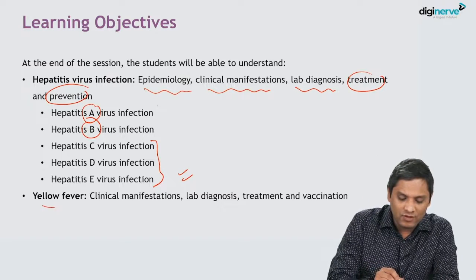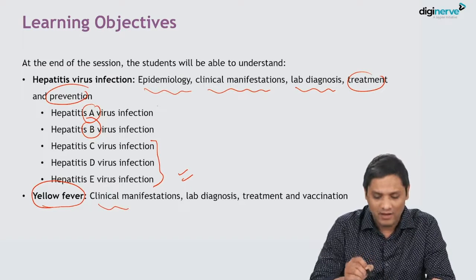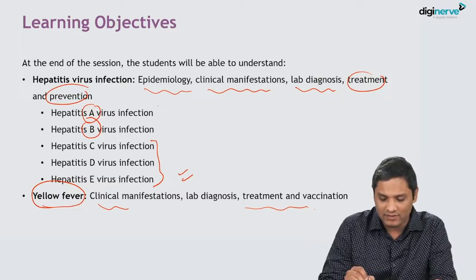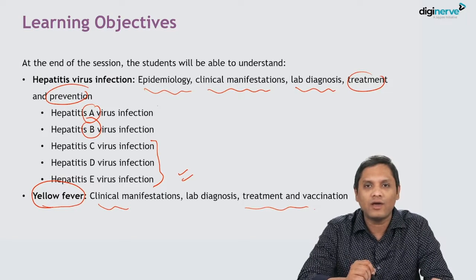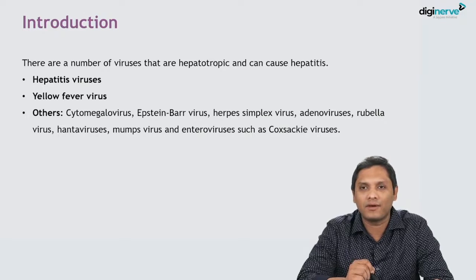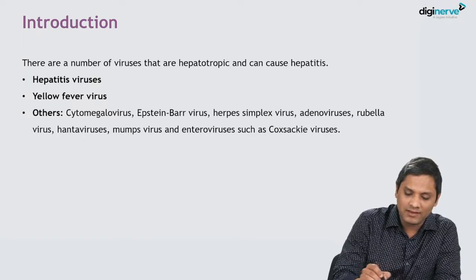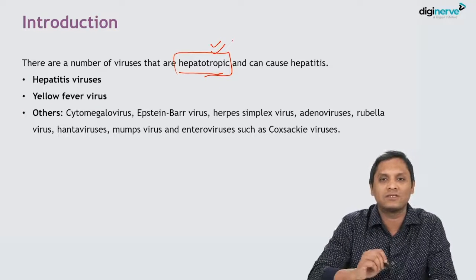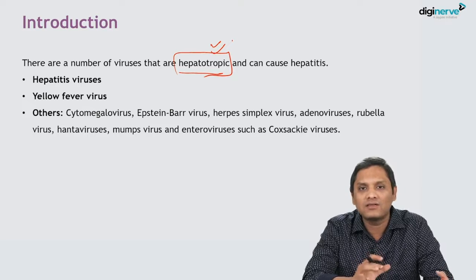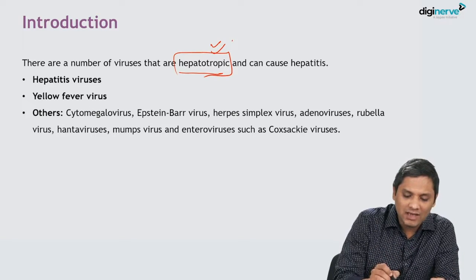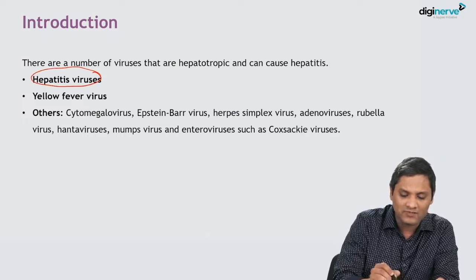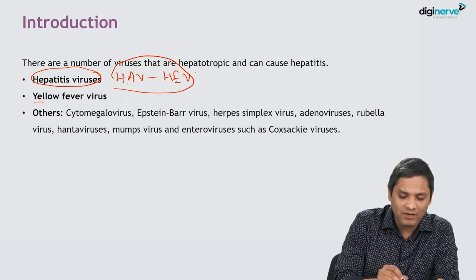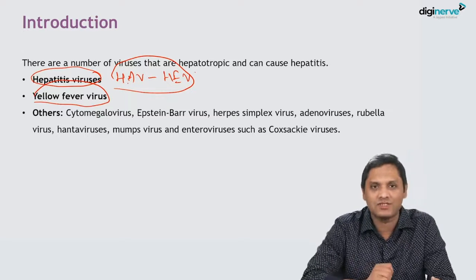We will also discuss yellow fever and its clinical manifestation in the next session. Viruses causing hepatitis are hepatotropic in nature — they have a predilection for liver infection. The classical examples include hepatitis viruses A through E, and also yellow fever virus, which is an arbovirus.